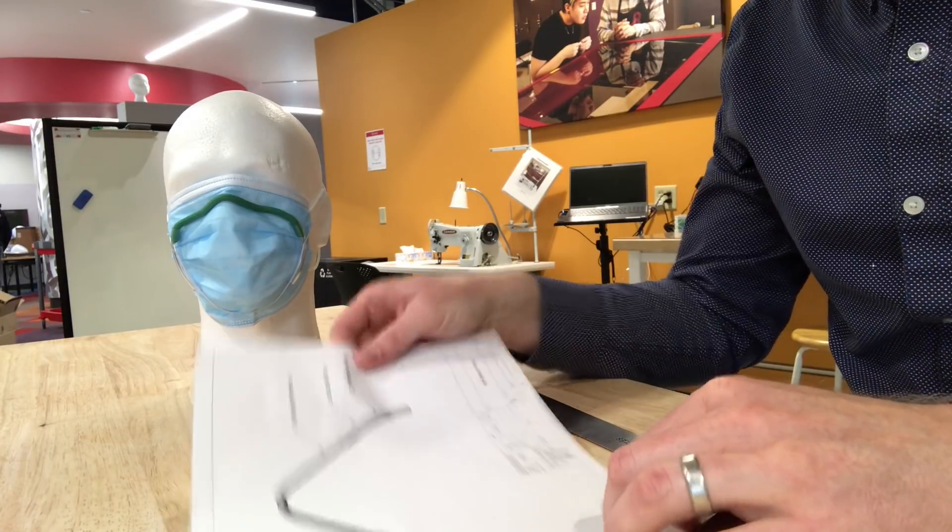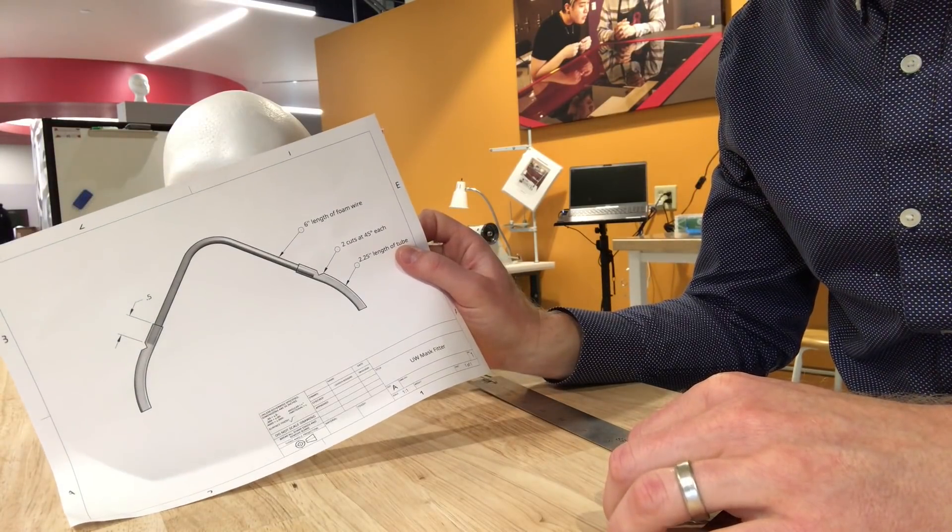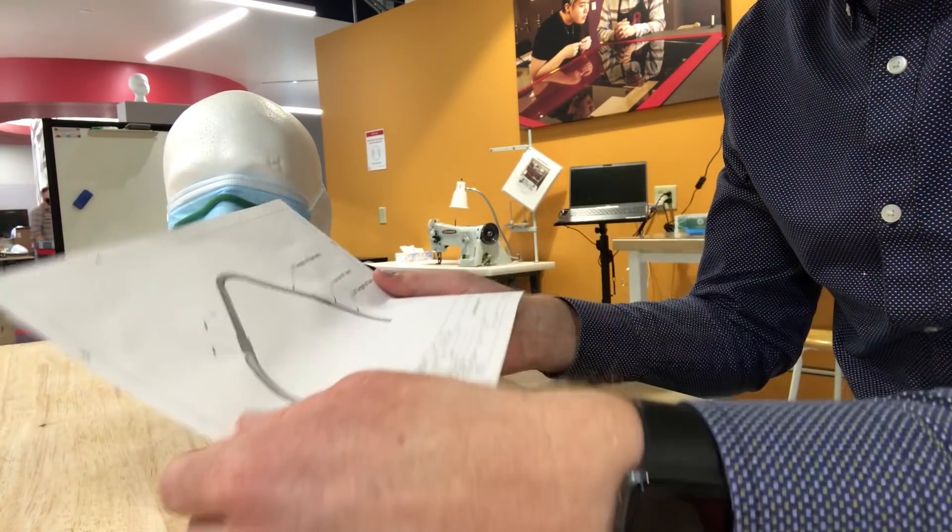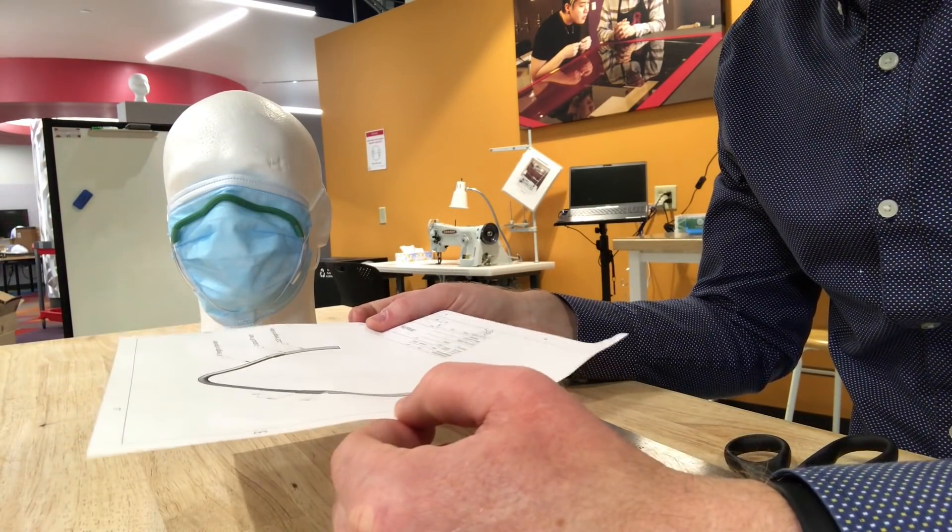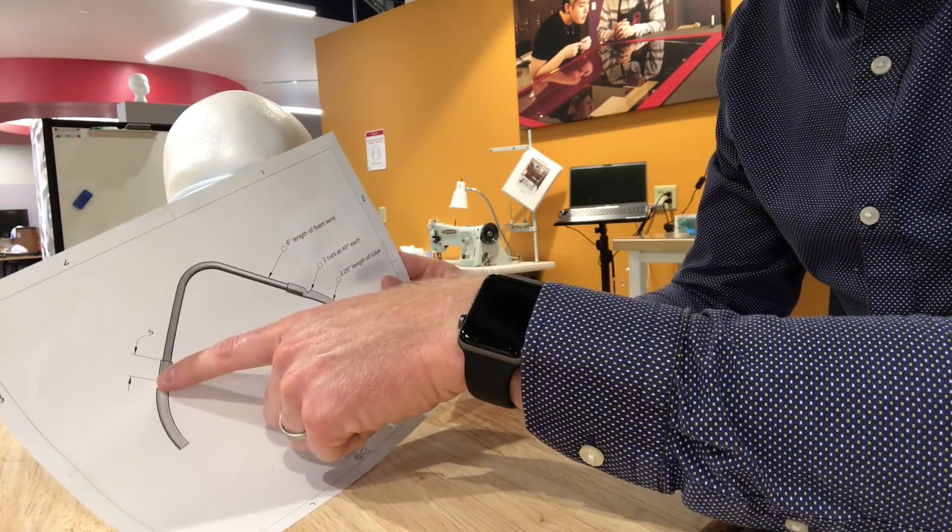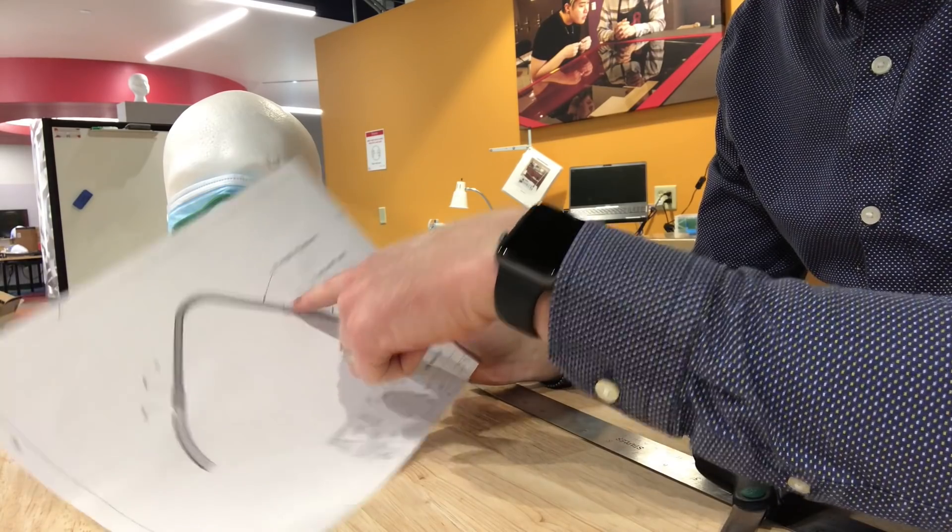One of the things that I did which is useful is to print out this one-to-one scale of some of the key parts of the badger seal, and that's on our website. You can download that and print it.